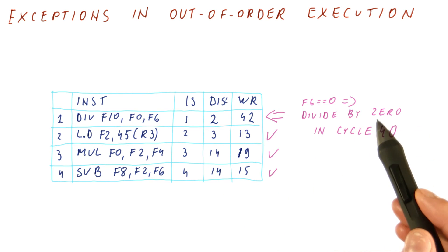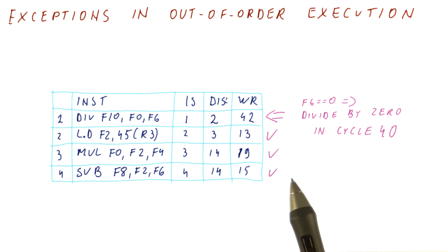So this problem of handling exceptions precisely is what's considered to be the major drawback of Tomasulo's algorithm as it was implemented.